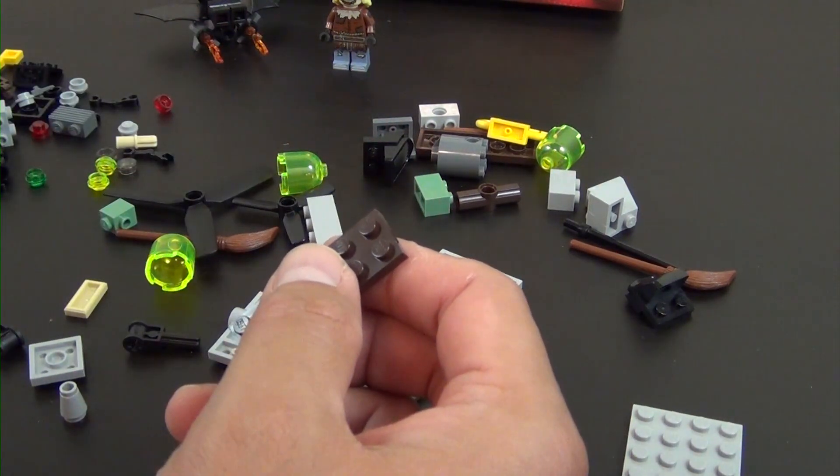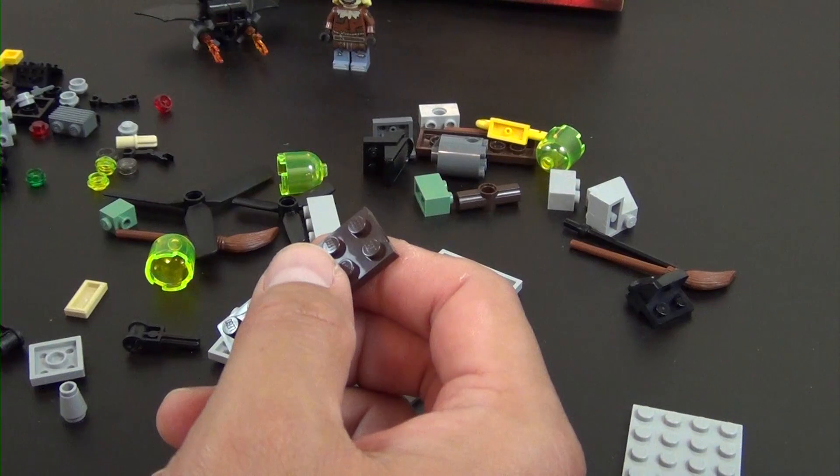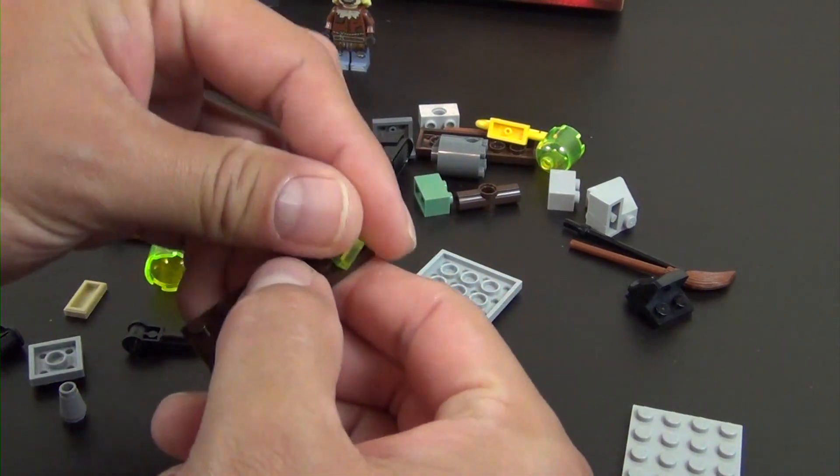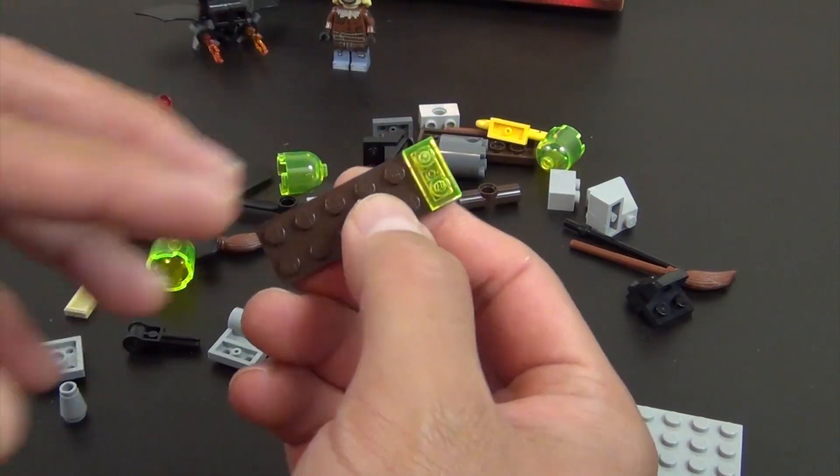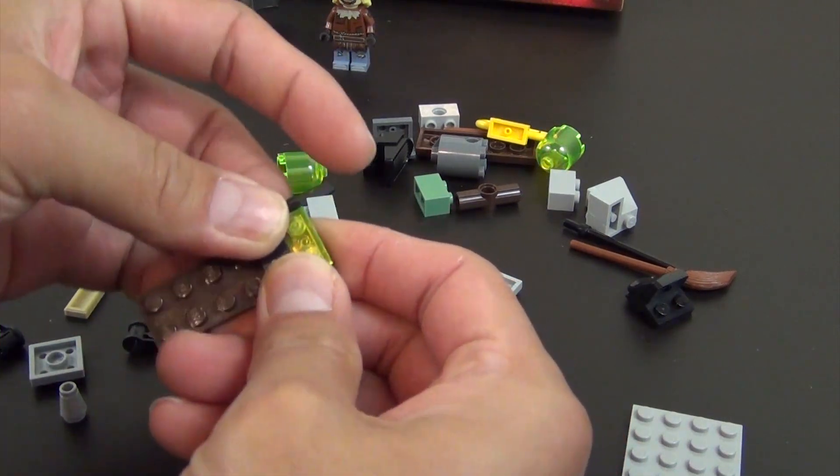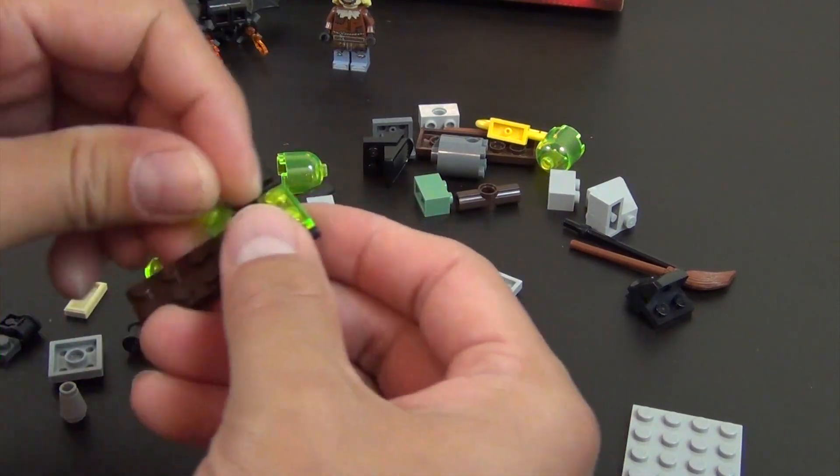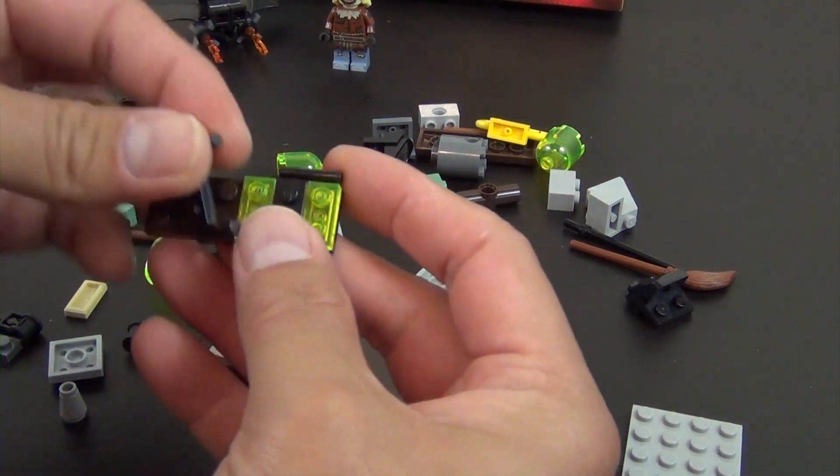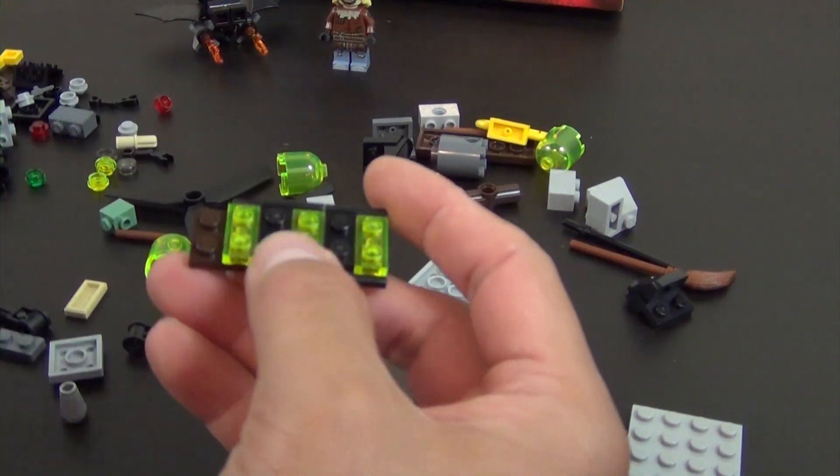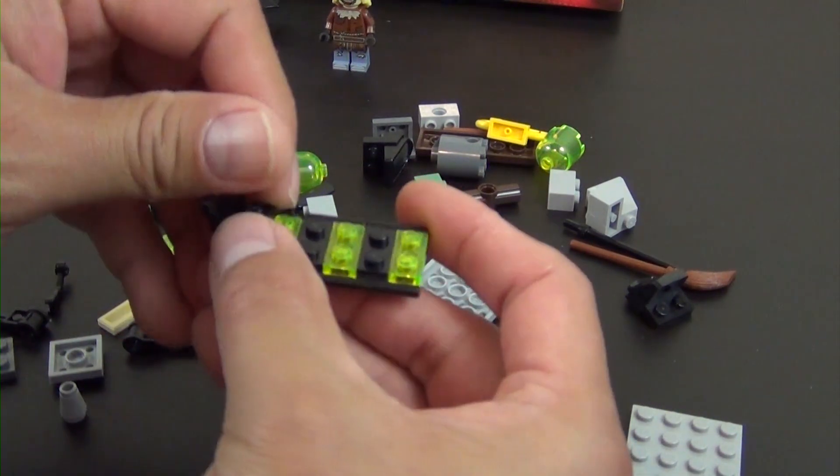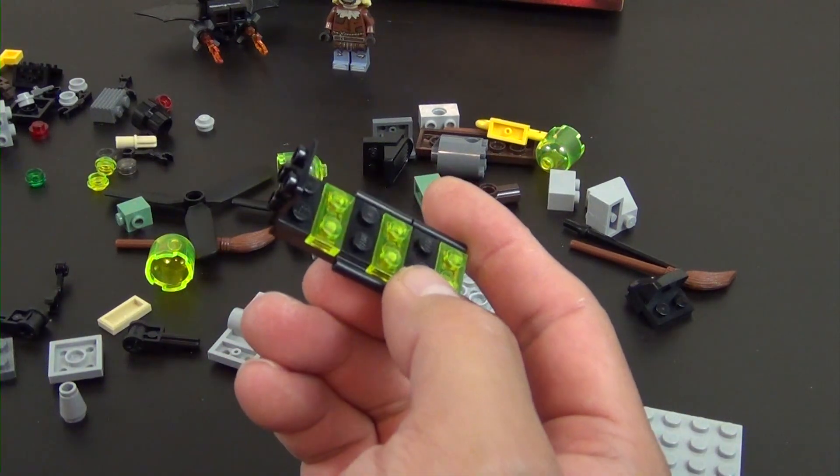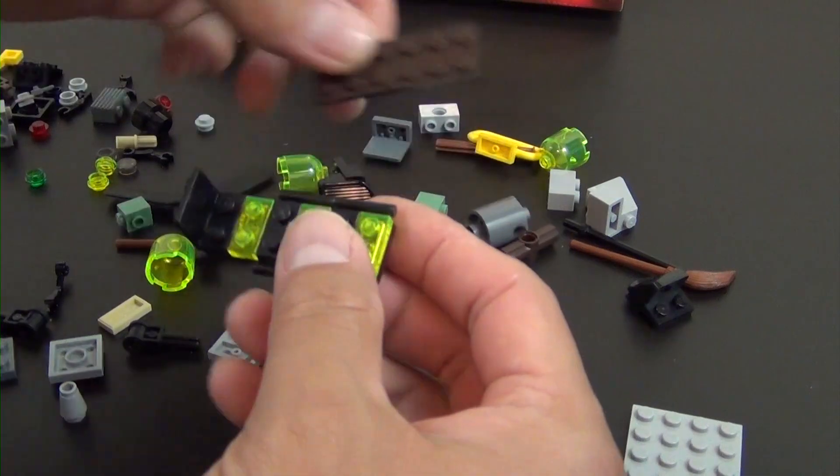So now this is going to be Scarecrow's little helicopter piece. So we start with this plate and we put a trans fluorescent yellow plate, plate with two bars on the side, and then repeat those steps all the way down. Kind of created this stripe pattern, and we'll put a bracket right there and then a plate on the top.